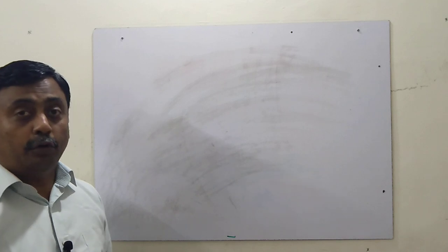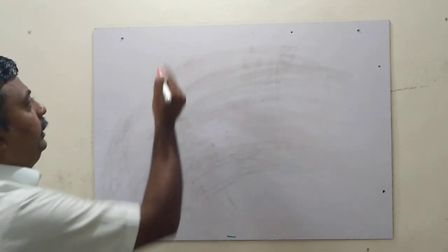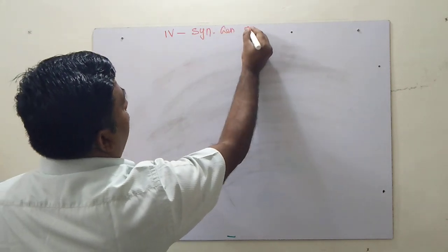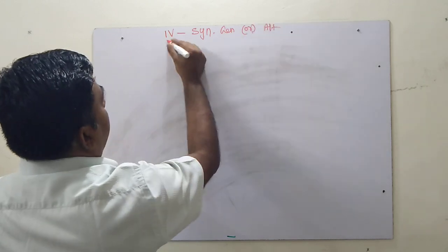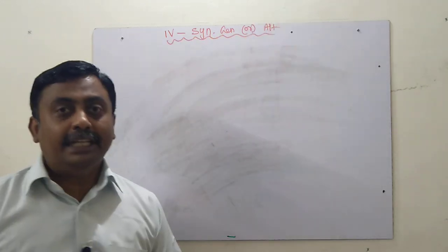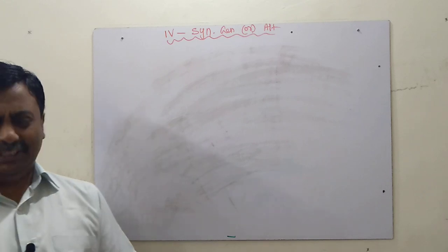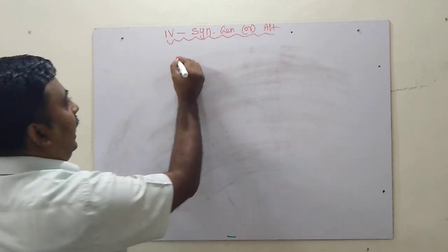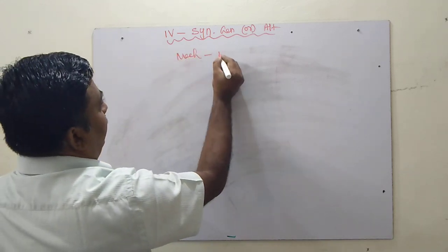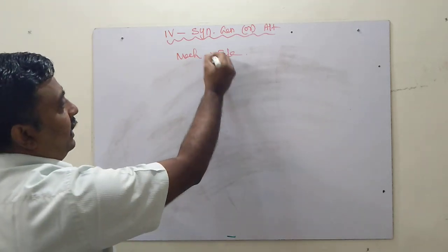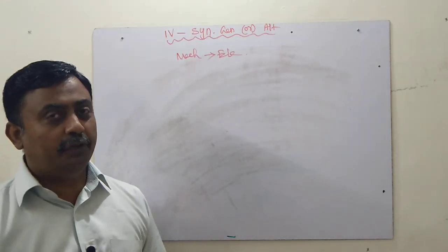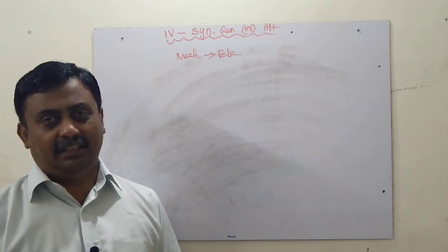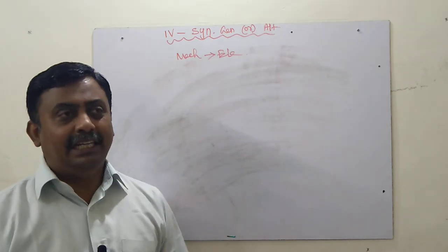Today we are going to see the fourth unit, which is the synchronous generator or alternator. What is meant by a synchronous generator? A generator converts mechanical energy into electrical energy. We have already seen the DC generator, and here we are going to see about the AC generator.